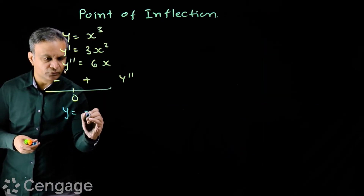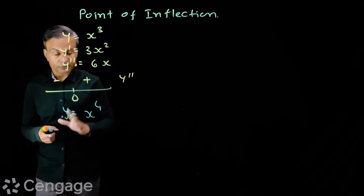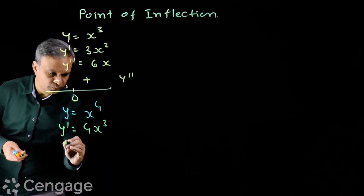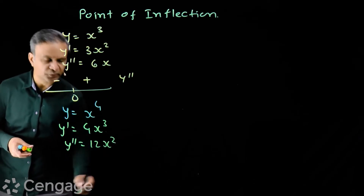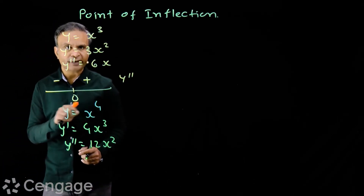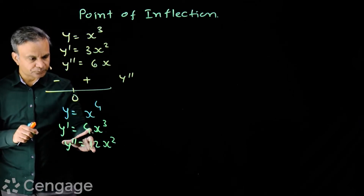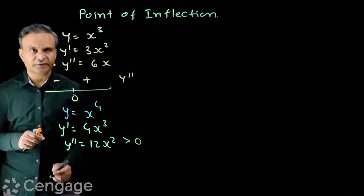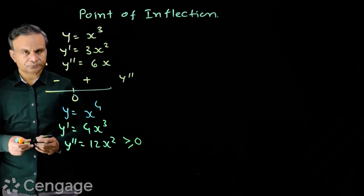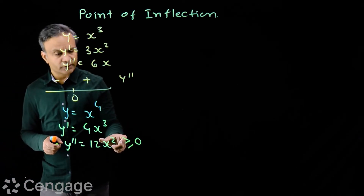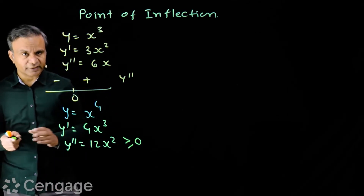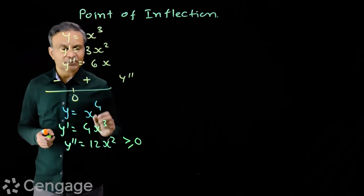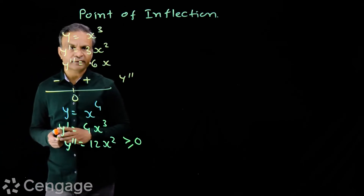Now consider the function y = x⁴. Its first derivative is 4x³ and second derivative is 12x². The second derivative is 0 at x = 0, but it is always greater than or equal to 0 otherwise — it does not change its sign at 0. So here x = 0 is not a point of inflection.